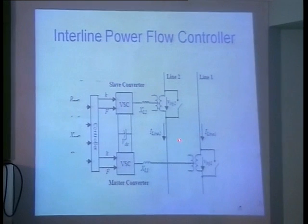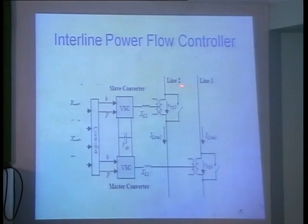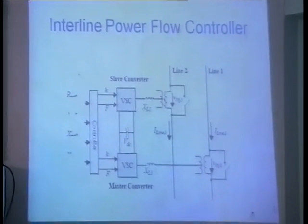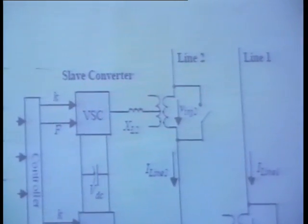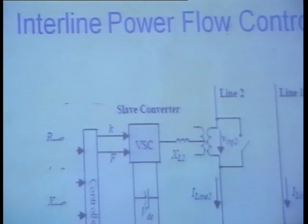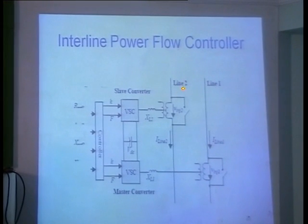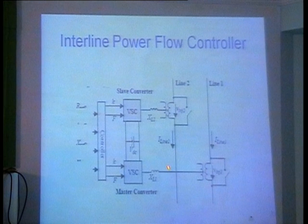For IPFC you need a 4-bus system: two sending-end buses and two receiving-end buses. If one line has a bigger generator but less load and another has a smaller generator but more load, the first line operates as a rectifier to extract power and the second operates as an inverter to inject that power.